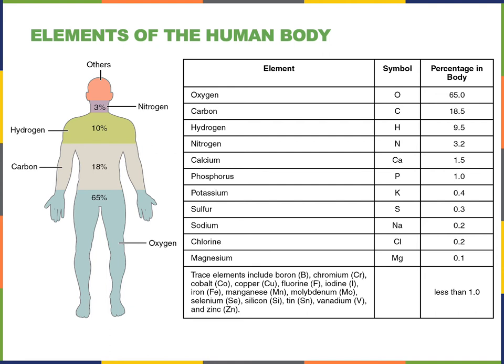Here we can see the relative proportions of elements that make up the human body. You can see that 65% of the human body is oxygen, 18% carbon, 10% hydrogen, and 3% nitrogen.